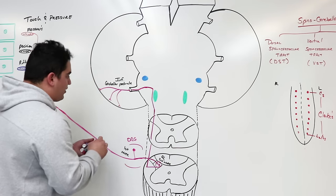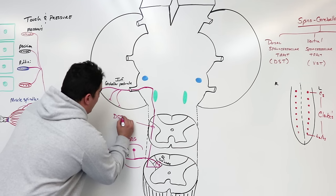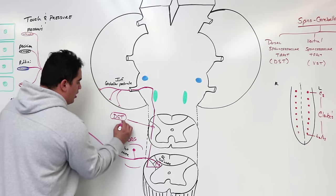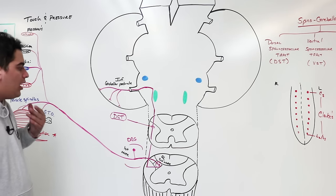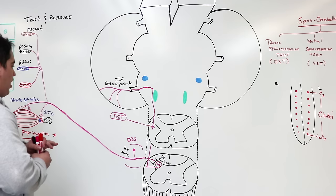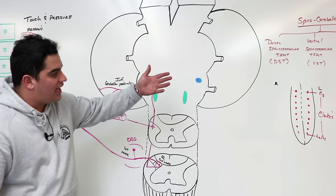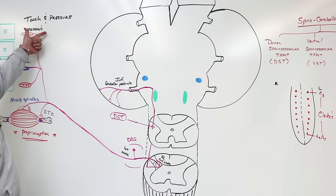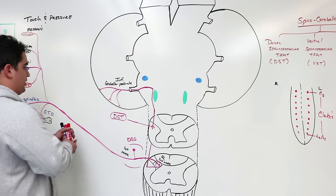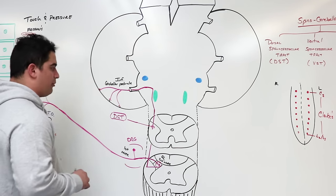As the dorsal spinocerebellar tract ascends, it passes through a white matter structure called the inferior cerebellar peduncles, connecting the medulla to the cerebellum. It then supplies the cerebellar cortex, which is the final termination site. The DST extends from C8 down to L3, picking up touch, pressure, and proprioception, and the third-order neuron is the cerebellar cortex.